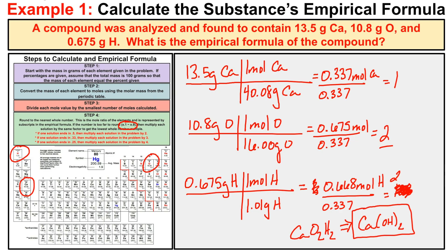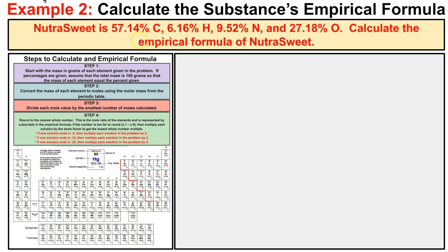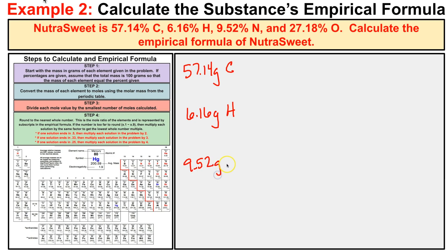Let's look at another example. NutraSweet is 57.14% carbon, 6.16% hydrogen, 9.52% nitrogen, and 27.18% oxygen. We need to calculate the empirical formula. For step one, since percentages are given, we assume a 100-gram sample. That means we have 57.14 g of carbon, 6.16 g of hydrogen, 9.52 g of nitrogen, and 27.18 g of oxygen — we just convert the percent signs to grams.